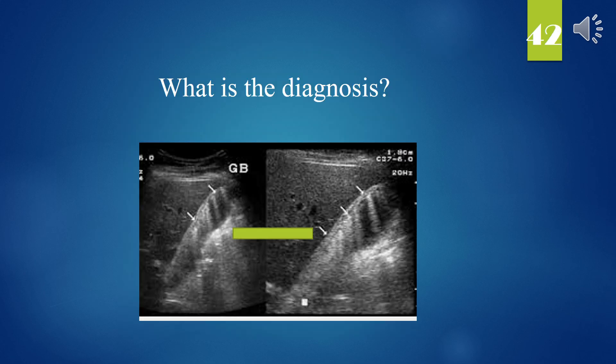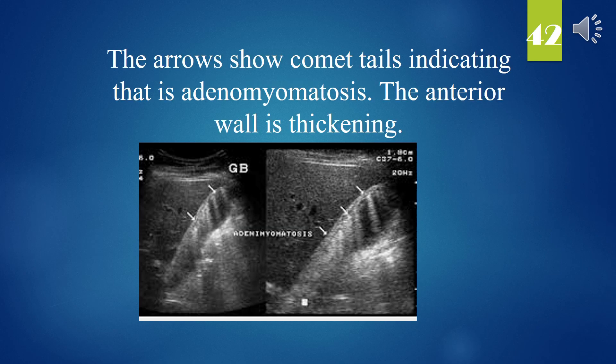What is the diagnosis? The arrows show comet tails indicating adenomyomatosis. The anterior wall is thickening.